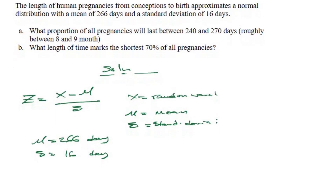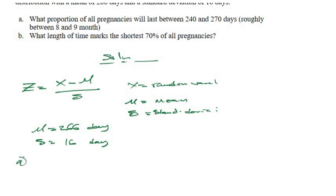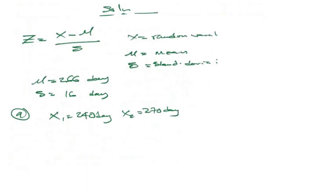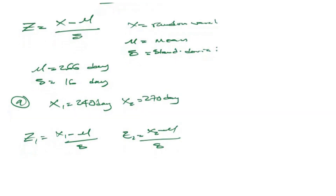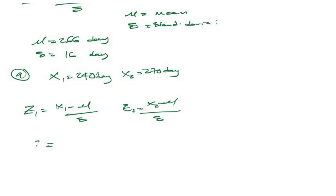For part A, we have two x-values. We are told the pregnancy length is between 240 days and 270 days, so x1 equals 240 days and x2 equals 270 days. We need to find z1 and z2. Our z1 equals x1 minus mu all over sigma, and z2 equals x2 minus mu all over sigma.